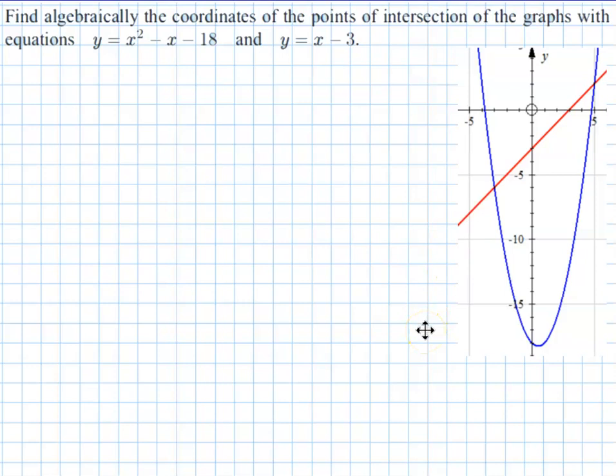So to solve those, we are solving two equations simultaneously. That implies simultaneous equations, and substitution will be our option here. So we'll substitute one equation into the other. So the first thing we do is label the equations number 1 and number 2, and we'll sub number 1 into number 2. So we get x squared minus x minus 18 equals x minus 3.